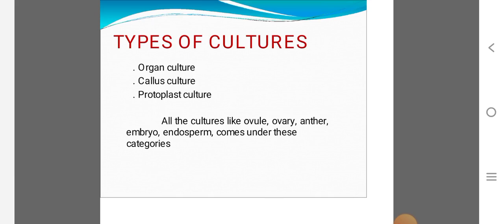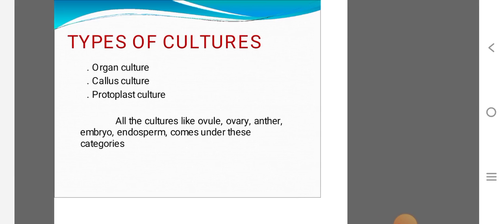First one is the organ culture, second is the callus culture, third one is the protoplast culture. In organ culture, you can use shoot, root with appropriate phytohormones. Callus is undifferentiated mass of cells. If you are using the callus induction, you can produce plants.